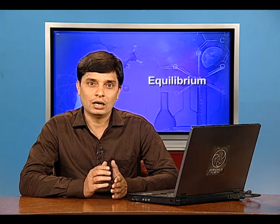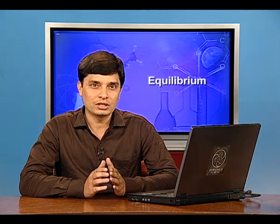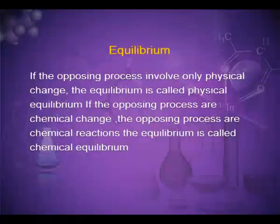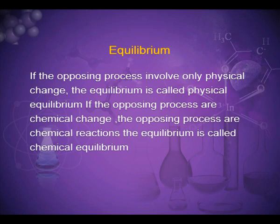If the opposing processes involve only physical change, the equilibrium is called physical equilibrium. If the opposing processes are chemical changes — that is, the opposing processes are chemical reactions — the equilibrium is called chemical equilibrium.